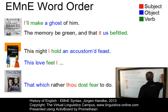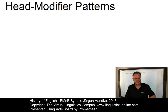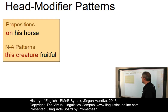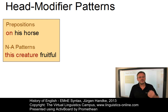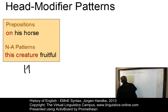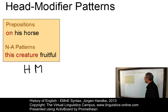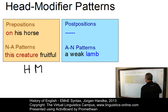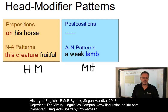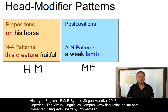Let us now look at head modifier patterns. The trend in early modern English in terms of word order correlations was still mixed. Typical head modifier patterns can be found in prepositional phrases like 'on his horse', where the preposition precedes its noun phrase. Noun-adjective patterns, by contrast, as in 'this creature fruitful', were relatively rare in early modern English. Modifier-head patterns, by contrast, were predominant in the sequence adjective-noun, but did no longer occur within adpositional phrases, where postpositions were no longer used.